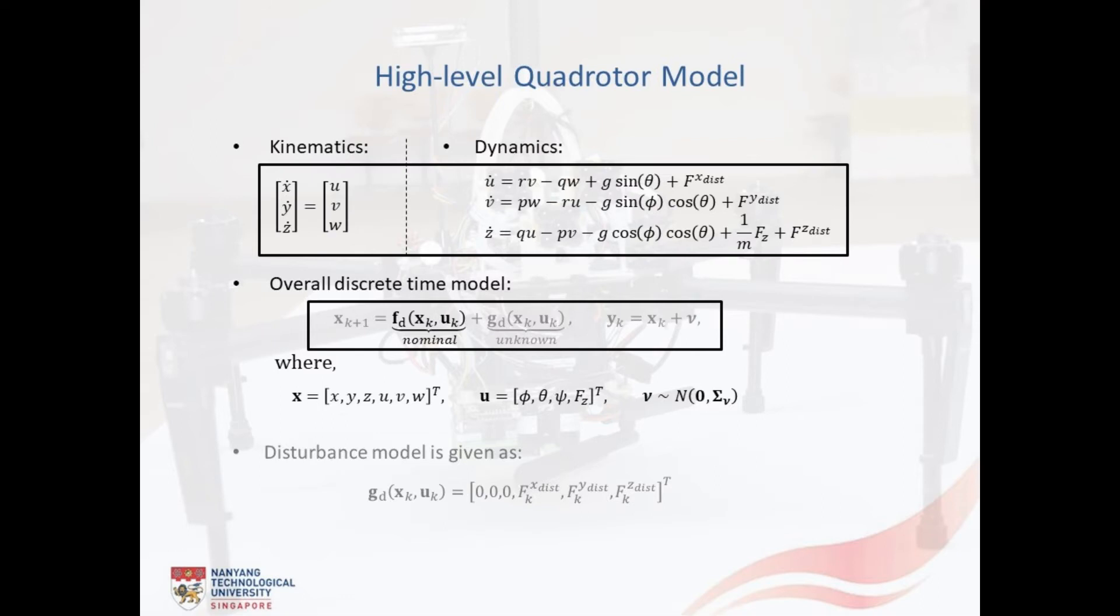On the other hand, we write the function GD as a disturbance model representing the discrepancy between the known nominal function and the observed system behavior.